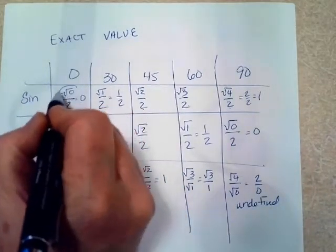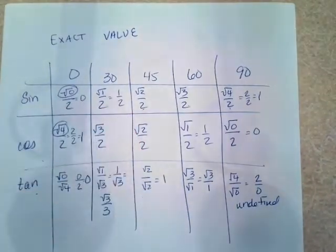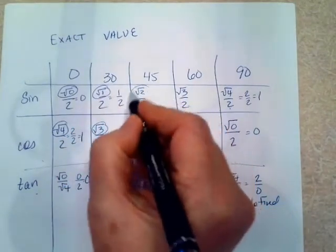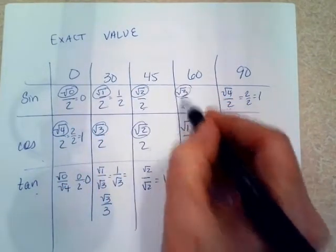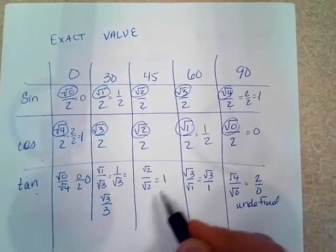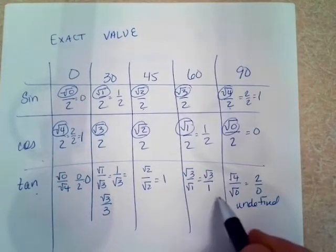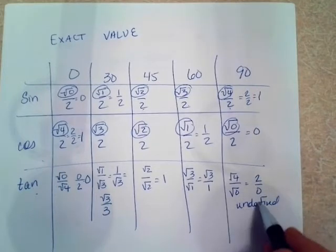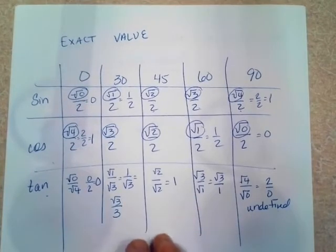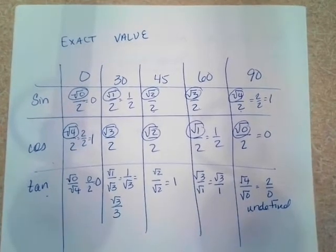And then for tangent, I take those two pieces and I form a fraction for tangent. And then I did some simplifying. You can stop the video and look at the simplifying that I did to get each of these answers. And don't forget that if you divide by 0, you are undefined. You may want to take a picture of this, recreate this on your unit circle. If it's not already there, but this is a helpful chart.